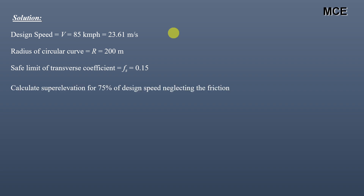To find the design super elevation according to the IRC, first you have to find the super elevation required for 75% of the design speed, but you have to neglect the lateral friction. So we will calculate the value of super elevation for 75% of the design speed, neglecting the lateral friction.